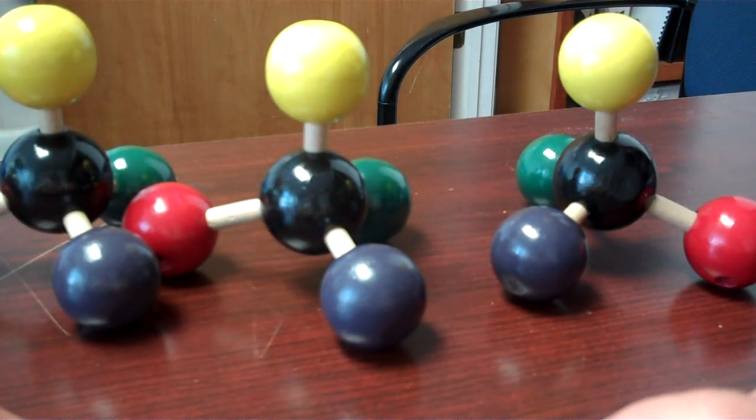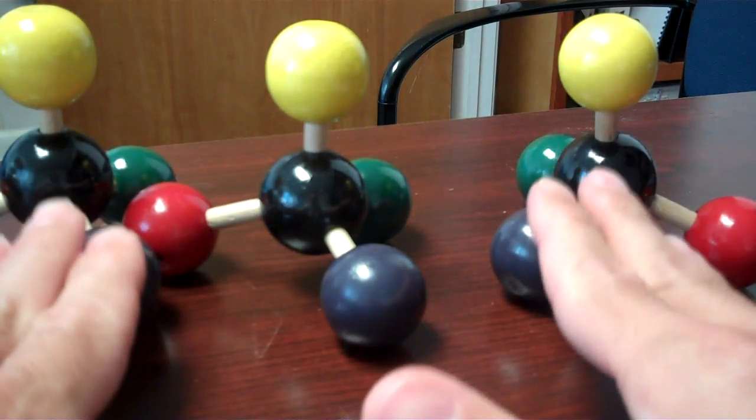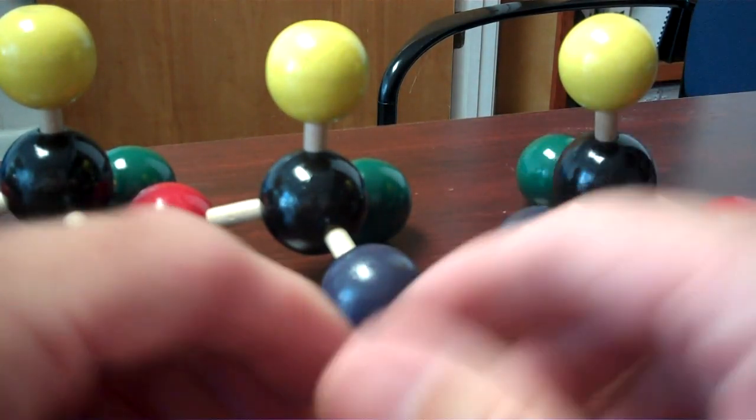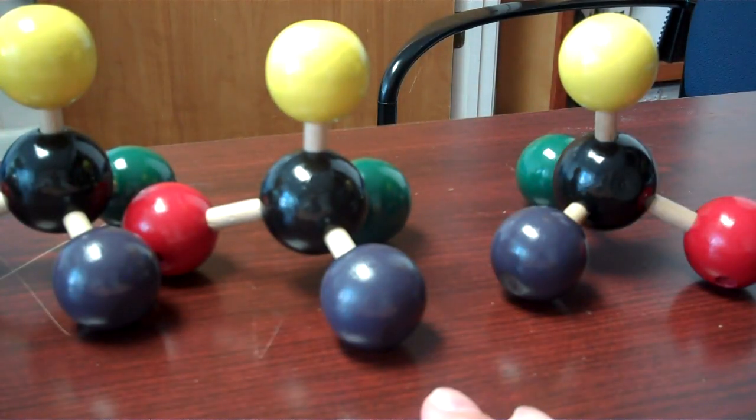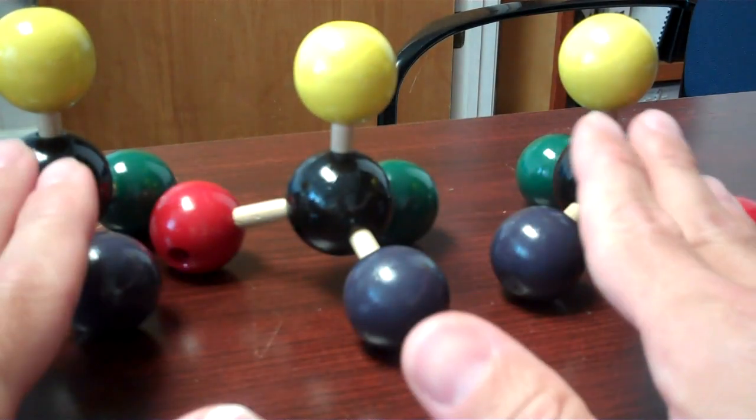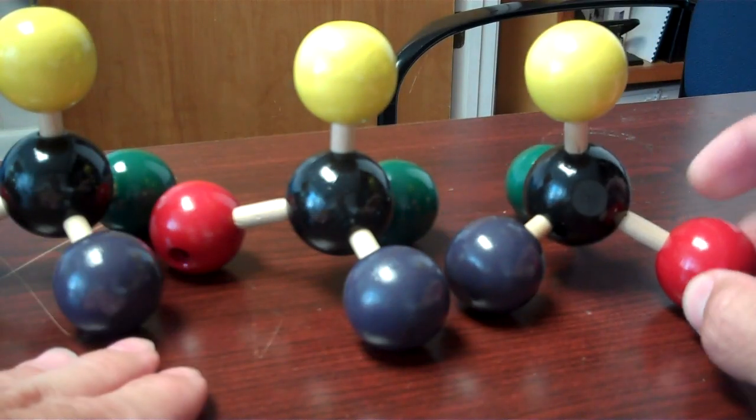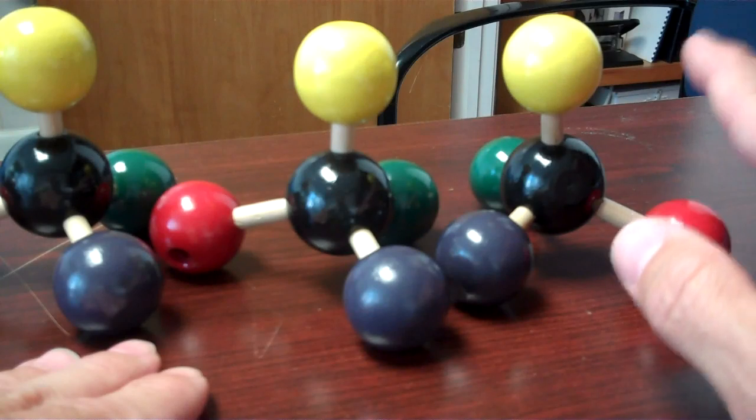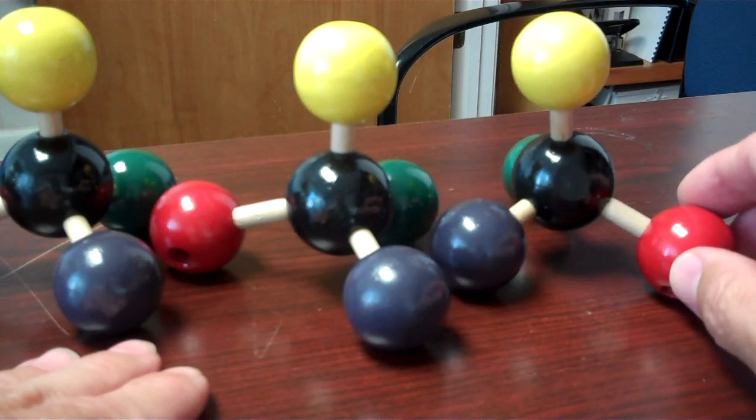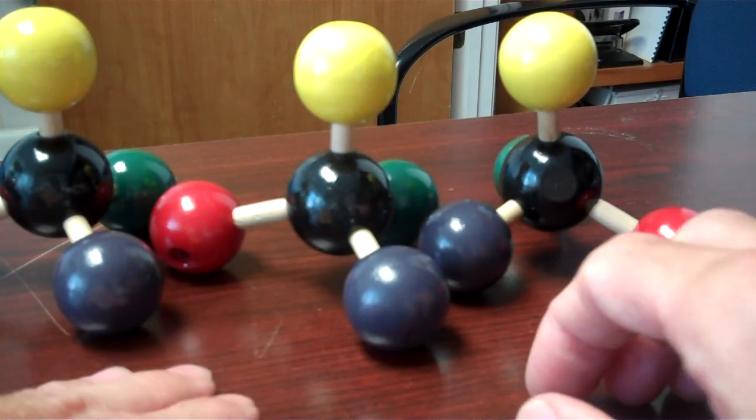So, as I say, a lot of times this is represented in two dimensions. Sometimes using representations of ball and stick models. In other instances using wedge and dash structures. And it's important to be able to interpret those. But nothing beats having an actual three-dimensional molecule like these that you can manipulate. And you can make your own models of these with gumdrops and toothpicks as long as they're of different colors so that you can establish these kinds of relationships here.